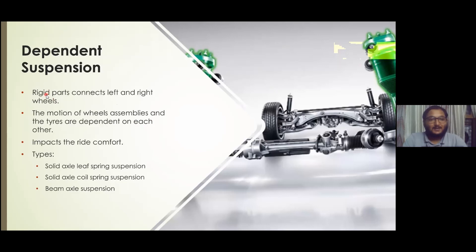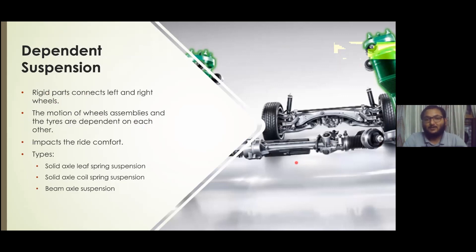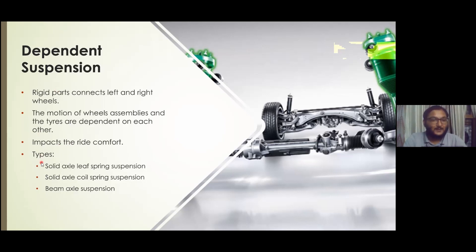First is the dependent suspension. In this, rigid parts connect the left and right wheels, so a deviation on one side — for example, a change in position on the right wheel — will also affect the position of the left wheel, which impacts ride comfort. Types of dependent suspensions include solid axle leaf spring suspension, solid axle coil spring suspension, and beam axle suspension, which we will learn about later.